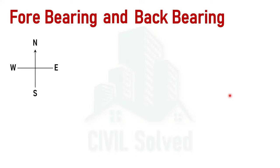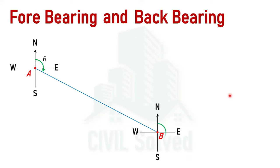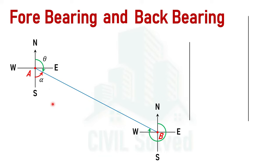Now let's discuss the case when the line lies in the southeast quadrant. Let's say the starting point is A and the ending point is B. Consider the bearing of AB as theta. Let's also consider that the angle from south to the line AB is alpha. Using the basic concept of geometry — if a third line cuts two parallel lines and one angle is alpha, the corresponding angle will also be alpha.